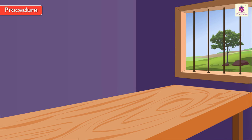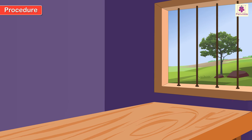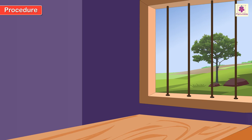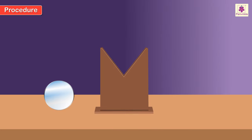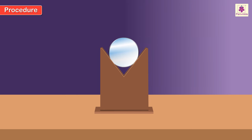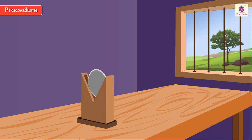Procedure. Step 1: Look out of a window from the laboratory and select any distant object that is brightly sunlit. For example, we shall consider this tree. Step 2: Place a concave mirror on its stand and put it on a table so that its reflecting surface is facing the distant object.